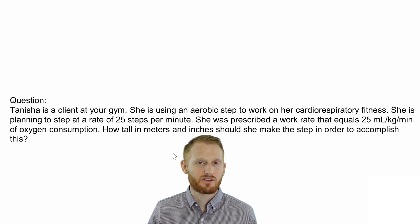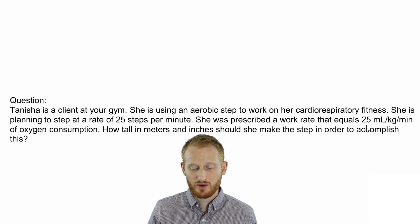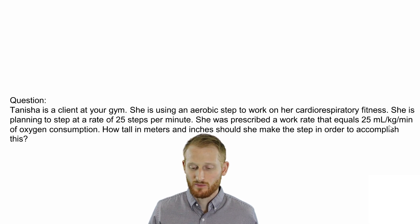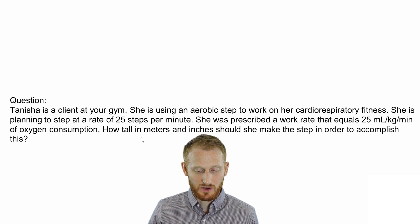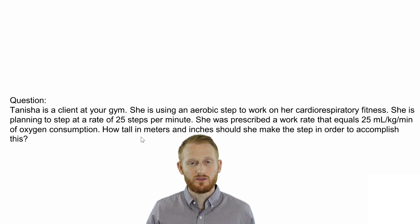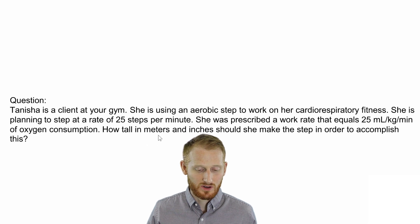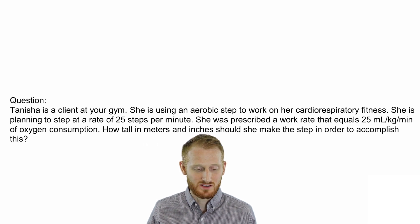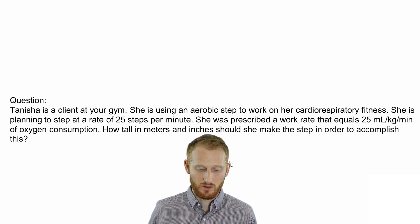So now we need to figure out the rest of this. She was prescribed a work rate that equals 25 milliliters of oxygen per kilogram of body mass per minute. And we need to figure out how tall the step or the box that she's stepping on and off of should be. And we're going to do that in meters as well as in inches, because depending on where you are, you're probably going to use one or the other of those.